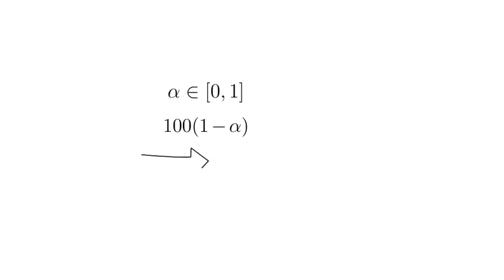Now you reject H0 at a 100 times 1 minus alpha confidence level if the following relationship holds. Now otherwise, you fail to reject H0. That decision rule is equivalent to rejecting H0 if the respective p-value is smaller than alpha.